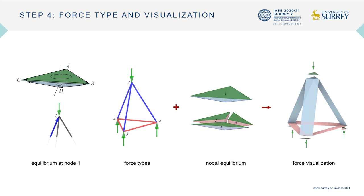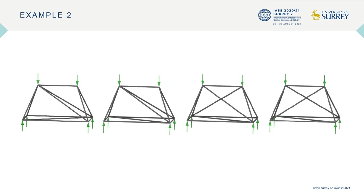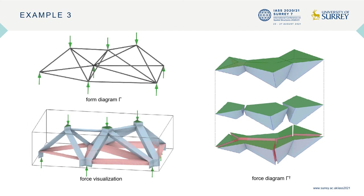Now let's look at more examples. Here is an example with four supports. We need to triangulate the form to ensure internal faces are planar — for example, by adding a diagonal member. With increasing numbers of loads and supports, there are more options for triangulation of the form. In this symmetric example, the diagonals carry no forces. The computation can be performed on examples with several loads and supports, and the force visualization can also be used as constant stress fields when using strut-and-tie models for design in a continuum such as reinforced concrete.